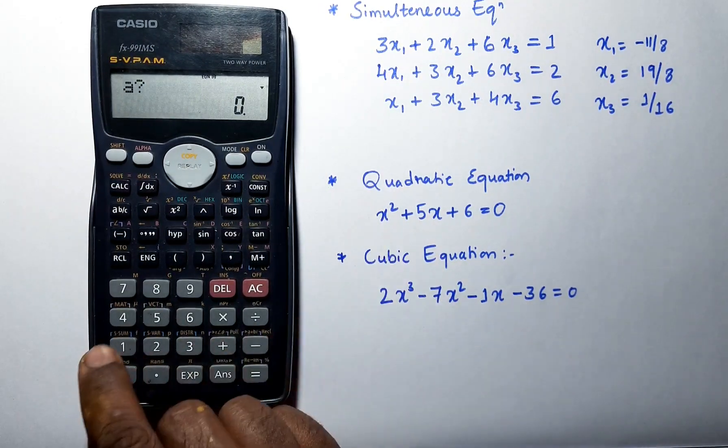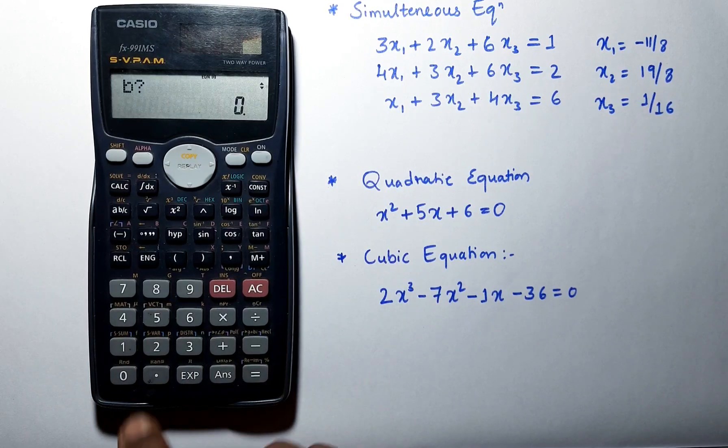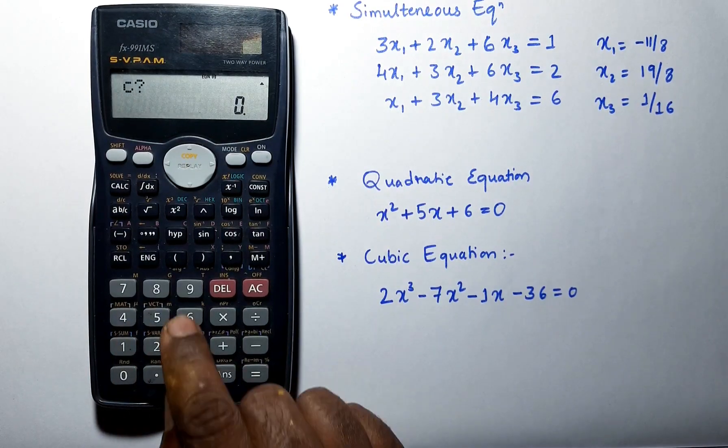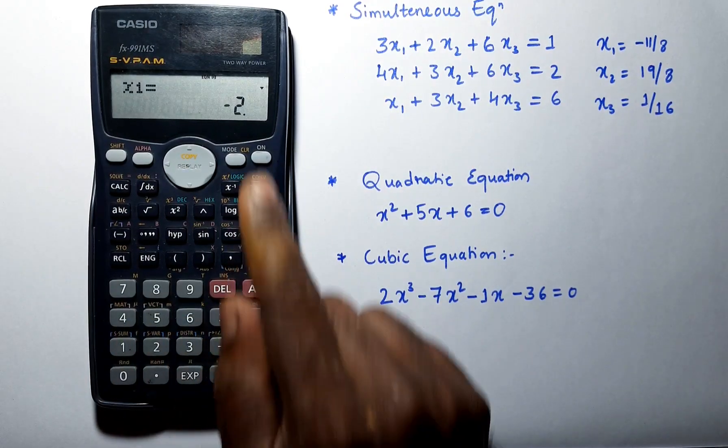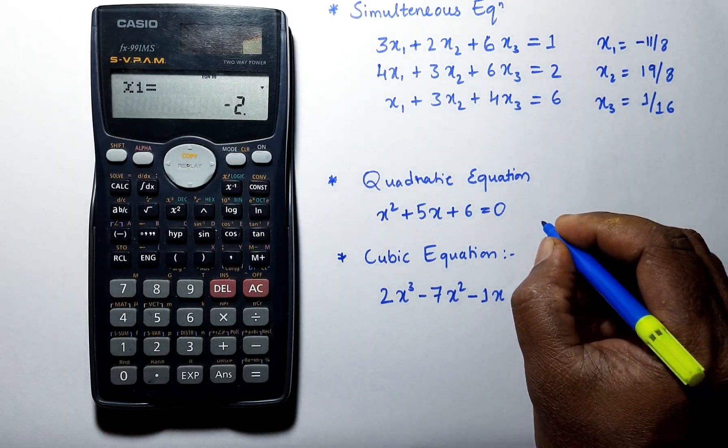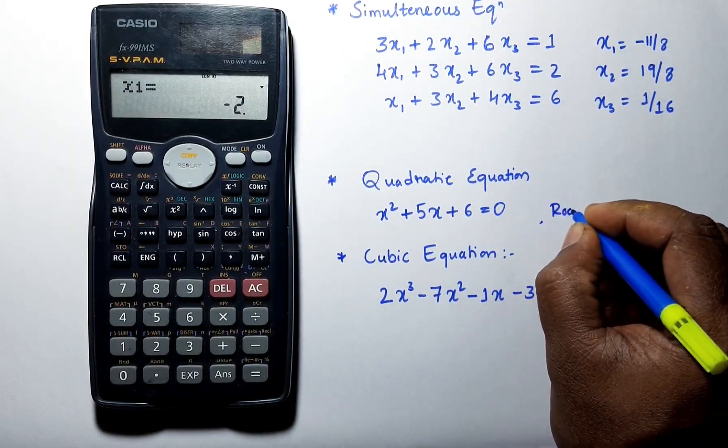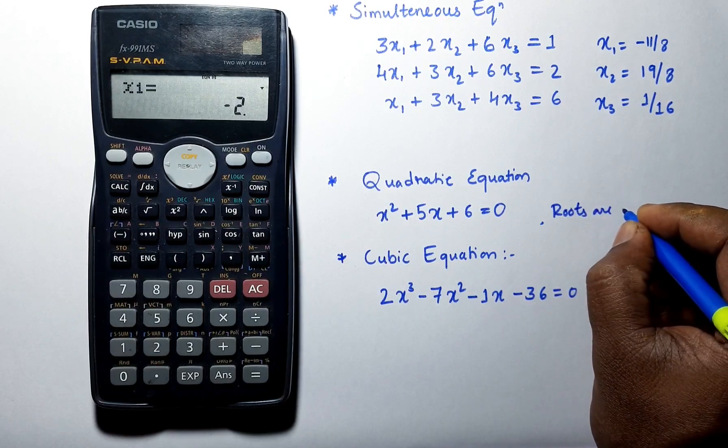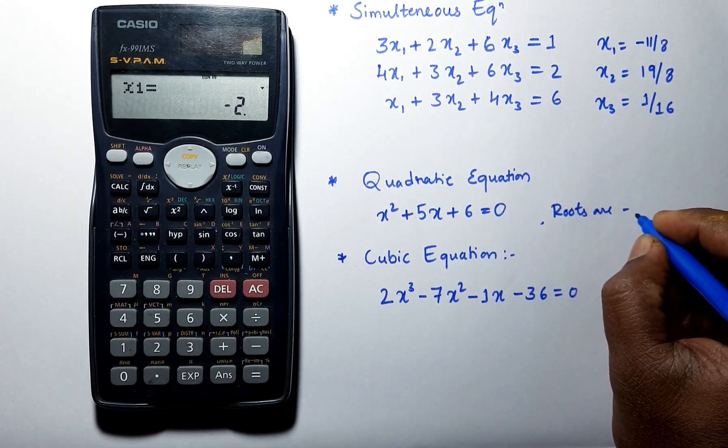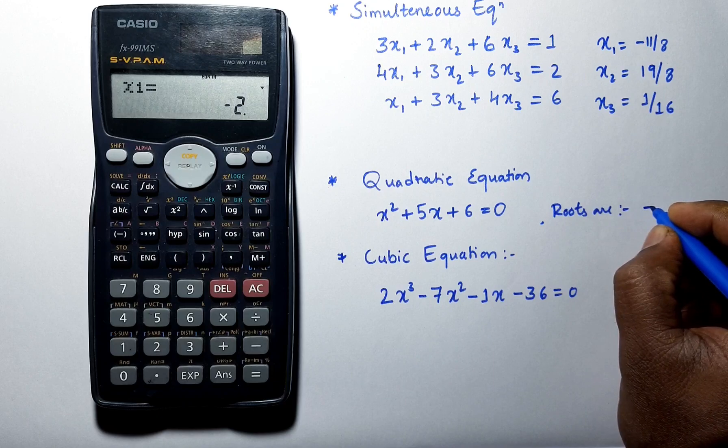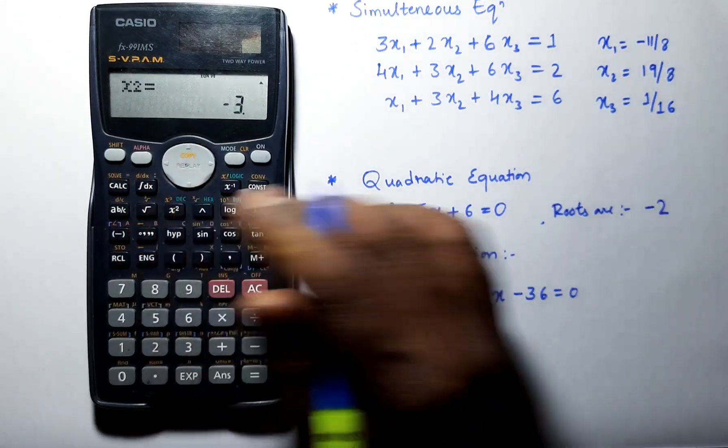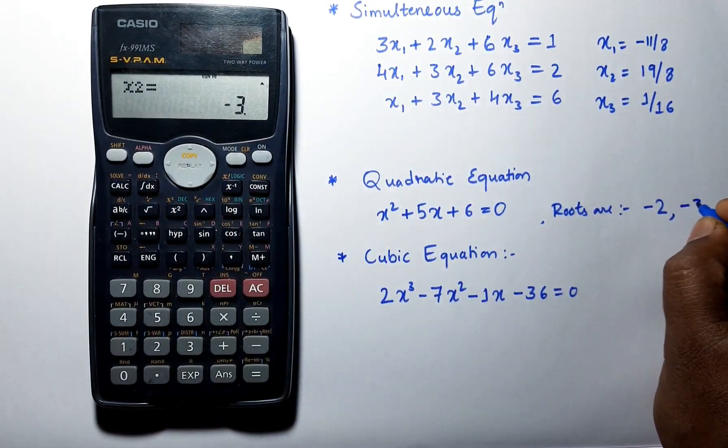Enter the coefficients which is 1, 5, 6 and we will get the roots as minus 2 and minus 3.